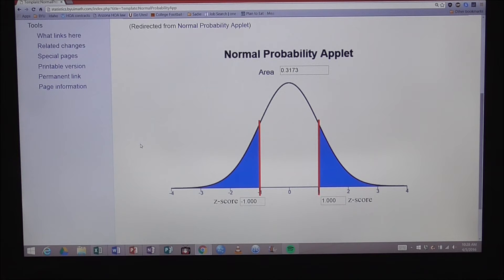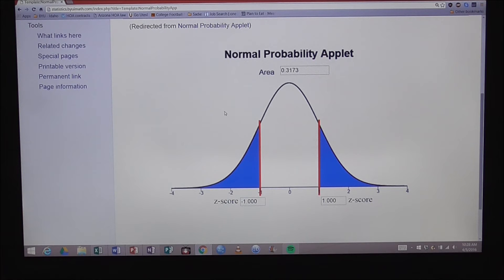In order to calculate a z-score for the 26th percentile, I'm going to use the normal probability applet. And what I'm looking for is the value of z such that 26 percent of the area under the curve is to the left of that value of z, and therefore 74 percent of the area under the curve is to the right of that value of z.